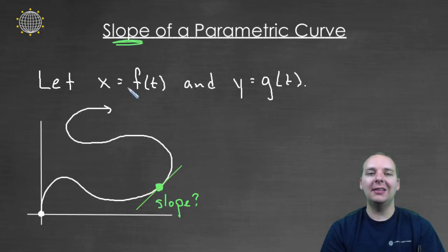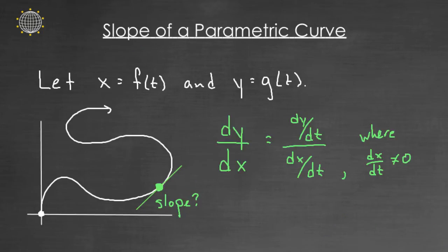So let's say x equals f of t and y equals g of t and it generates this white parametric curve here. And let's say we've chosen a point on that curve based off of some time value, and we want to know the slope there. Well here's how it works.